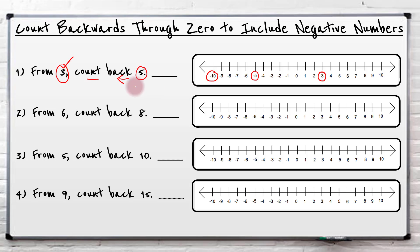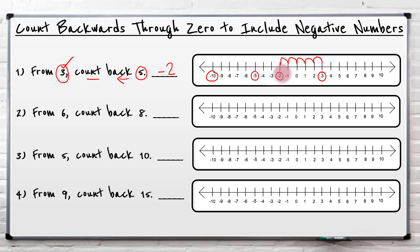So we've identified three and we need to come back five. We go from here and count five jumps: one, two, three, four, five. And it takes me to my answer of negative two. So whenever I'm at three and I count back five, I don't end up at zero — I actually end up beyond zero and I end up at negative two.